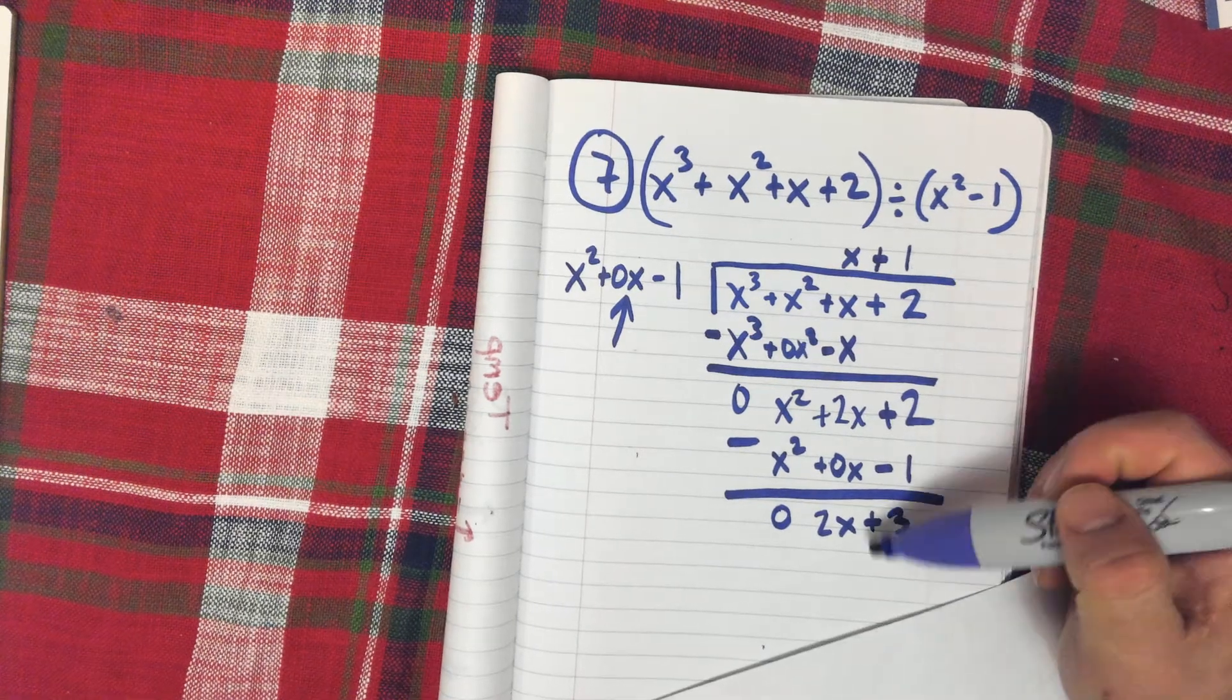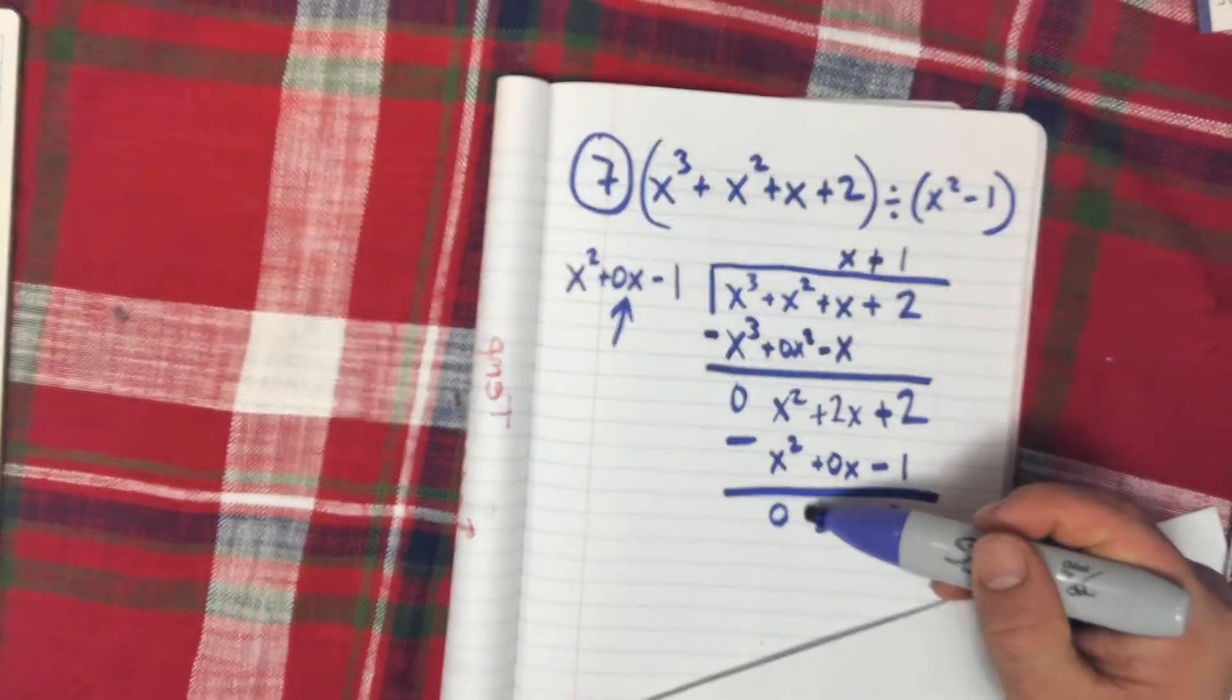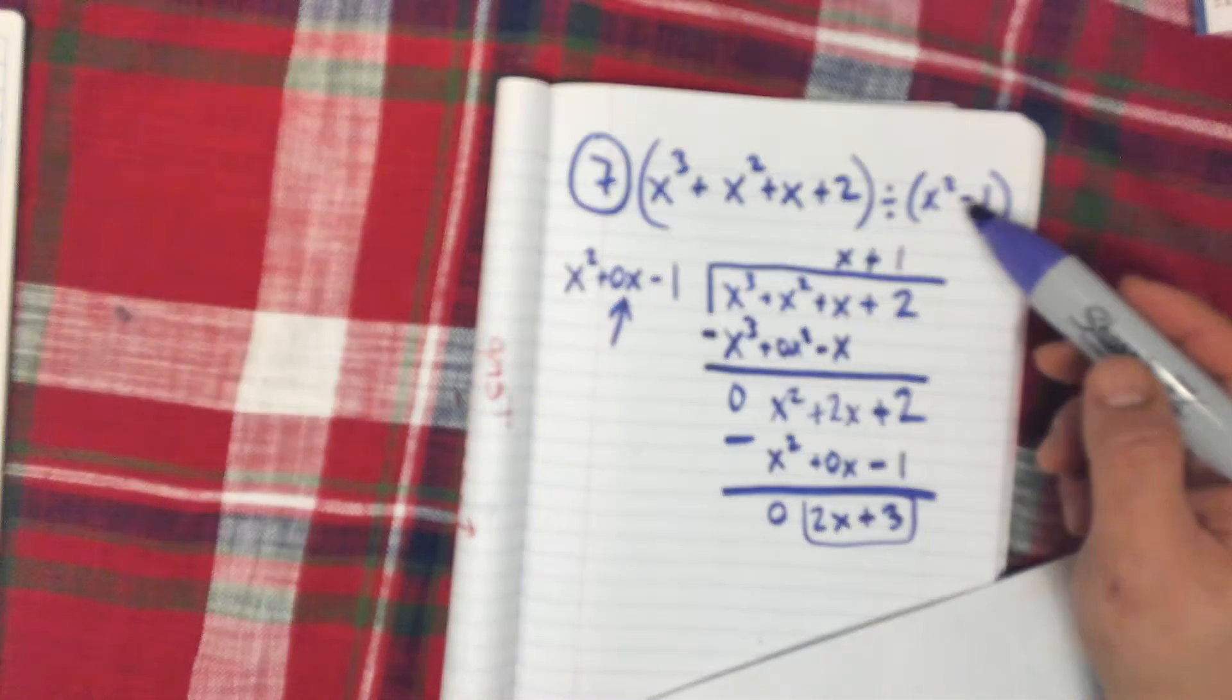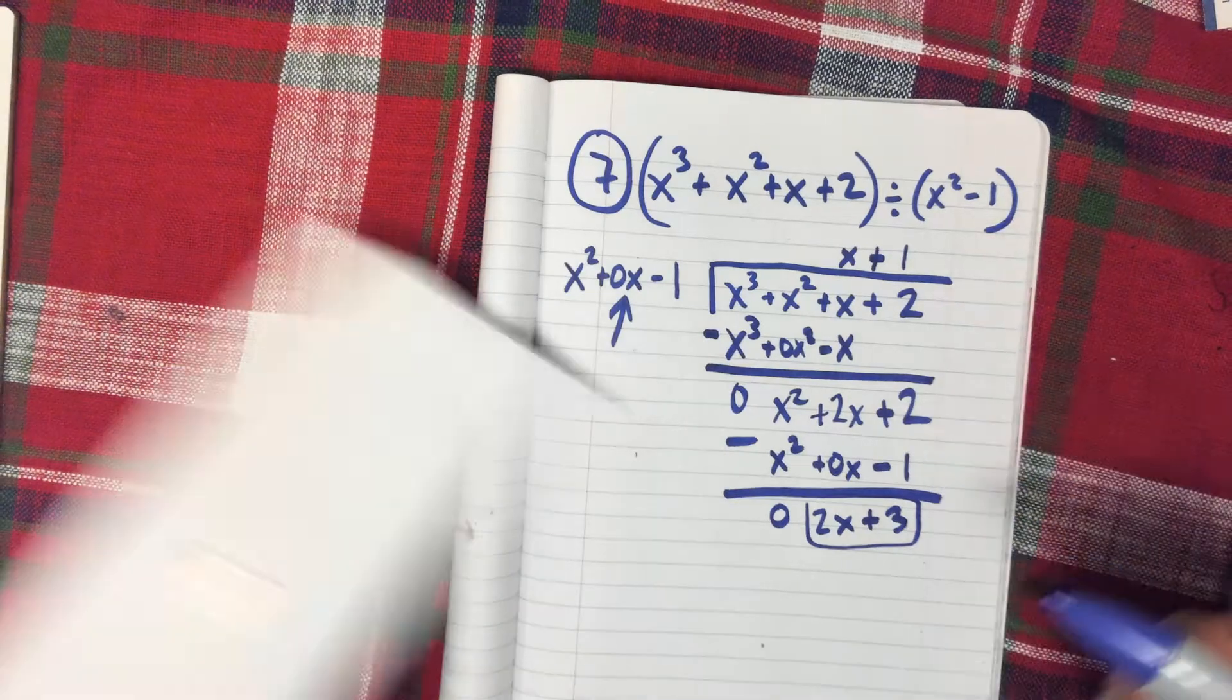But we've reached the end of the line, so this ends up being our remainder. So this divided by this, or let me write it like this.